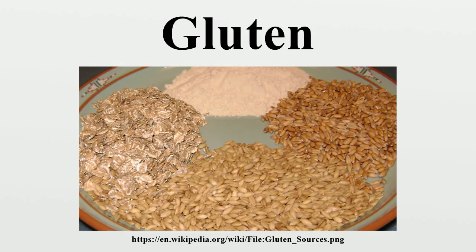The Codex Alimentarius International Standards for Food Labeling has a standard relating to the labeling of products as gluten-free, which only applies to foods that would normally contain gluten. In Brazil, all food products must by law display labels clearly indicating whether or not they contain gluten. In Canada, 1 in 133 Canadians experiences adverse symptoms from gluten in celiac disease, and labels for all food products sold in Canada must clearly identify the presence of gluten if it is present at a level greater than 20 parts per million.